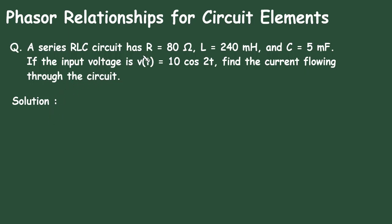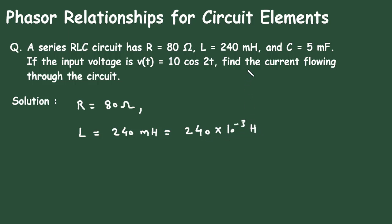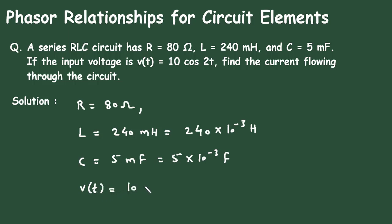First, we will write what is given. The value of resistance is R equal to 80 Ohm. The value of inductance is L equal to 240 mH, which is 240 × 10⁻³ Henry. The value of capacitance is C equal to 5 mF, which is 5 × 10⁻³ Farad. The input voltage V(t) is equal to 10 cos(2t) volts. We have to find the current I(t) flowing through the circuit.